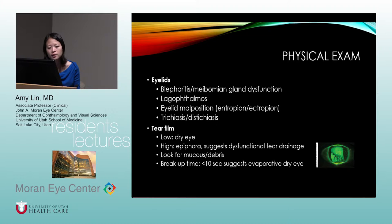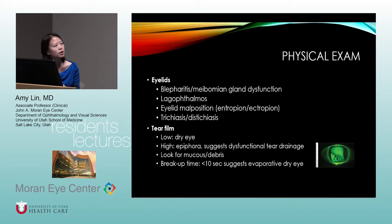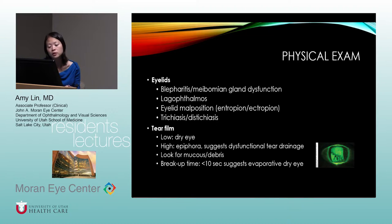On physical exam, look at the eyelids for blepharitis, meibomian gland dysfunction, and eyelid malposition such as entropion or ectropion. Look for trichiasis or distichiasis. Then inspect the tear film — low tear film indicates dry eye, and mucus floating in the tear film is another indication. A high tear film suggests epiphora from dysfunctional tear drainage rather than reflex tearing from dry eye.